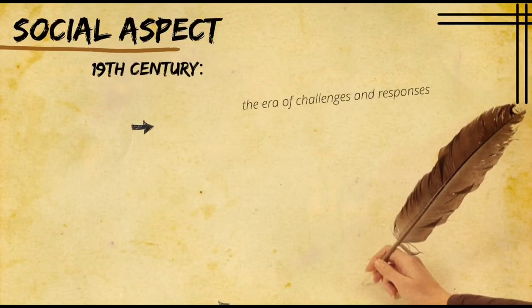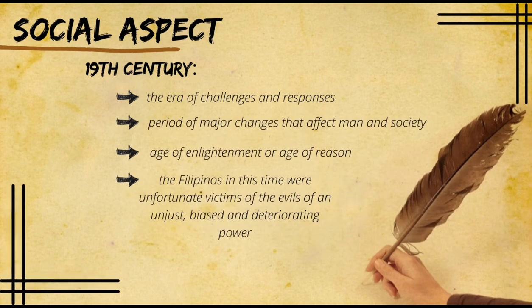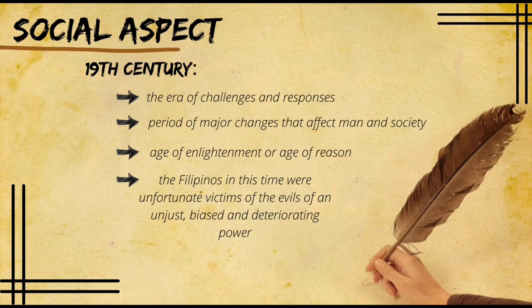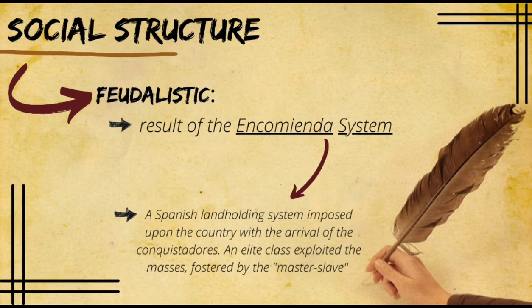The Philippines in the 19th century was the era of challenges and responses — a period of major changes that affected man and society. It was also called the Age of Enlightenment or the Age of Reason. Filipinos at this time were unfortunate victims of the evils of an unjust, biased, and deteriorating power. With regard to the social structure, the Philippines was predominantly feudalistic — a system in which people were given land and protection by those of higher rank in return for work and service.